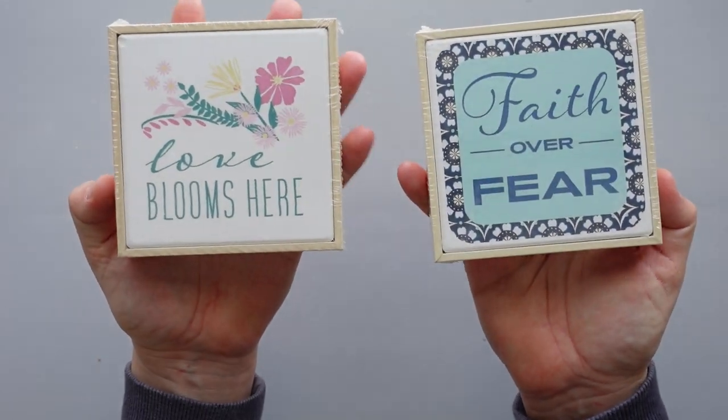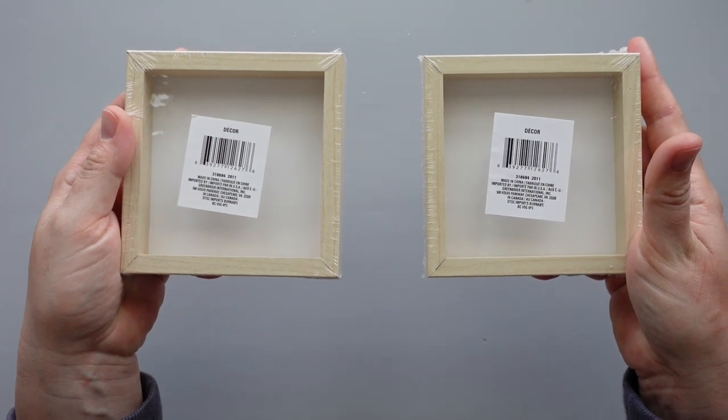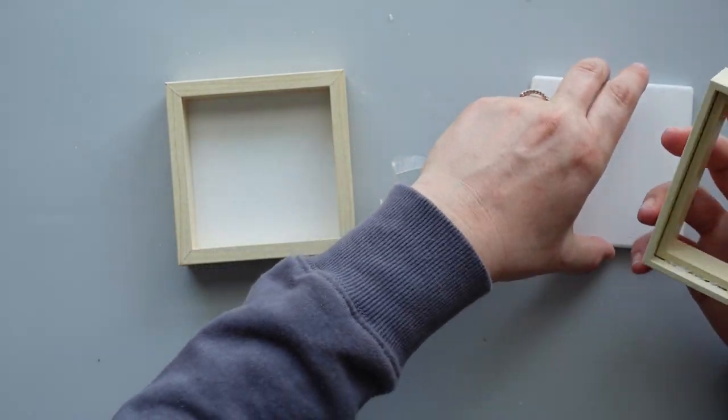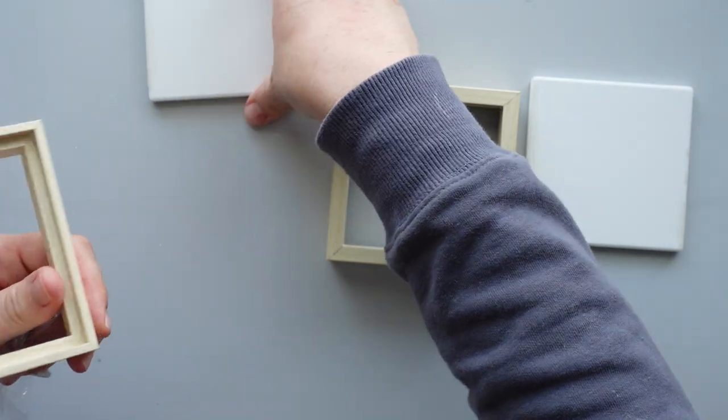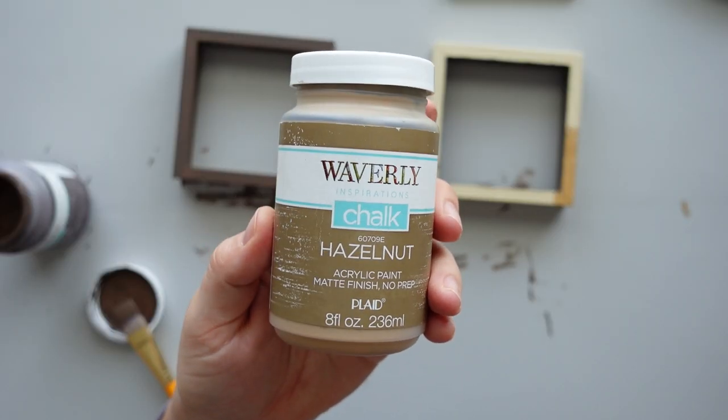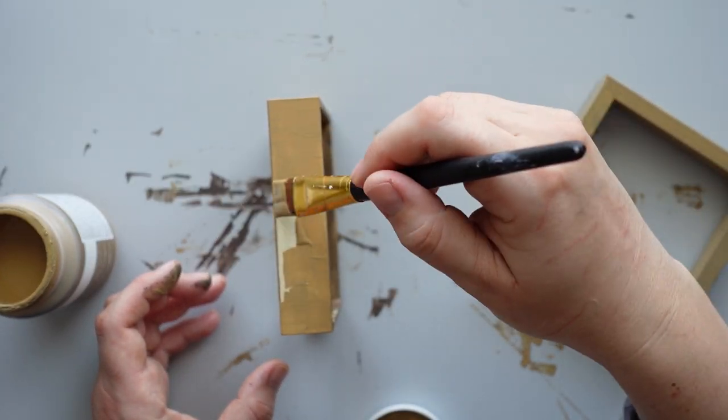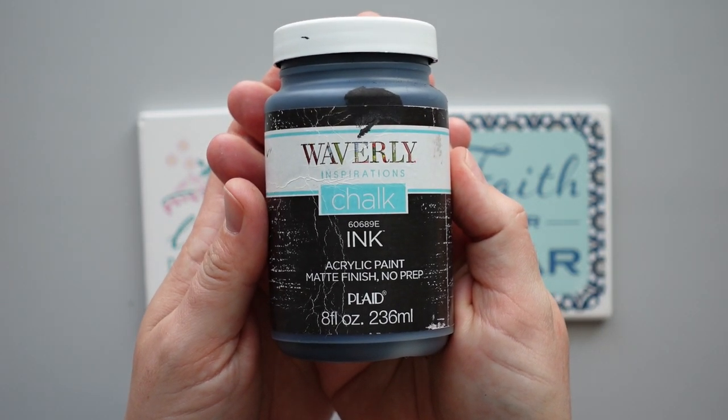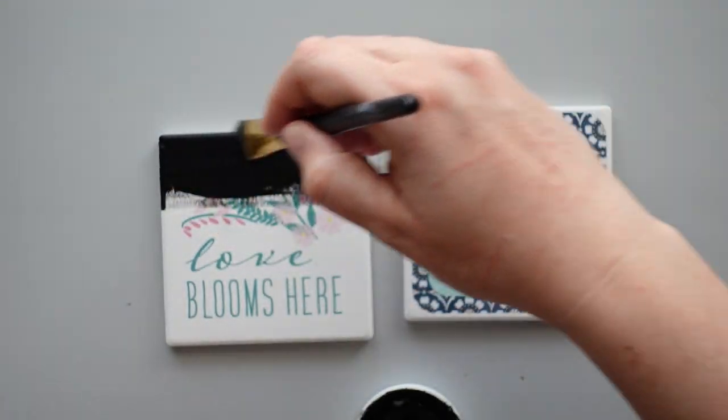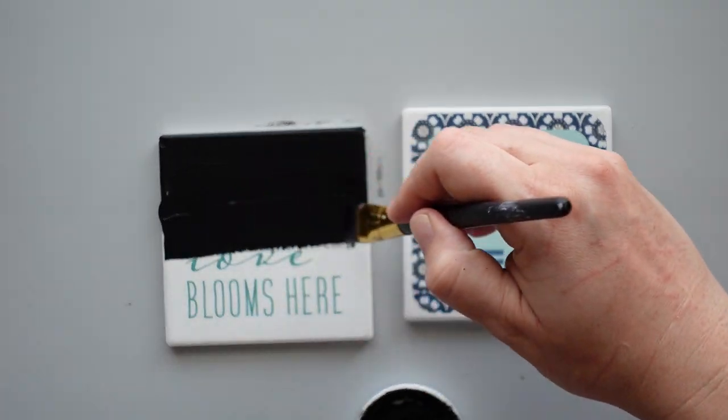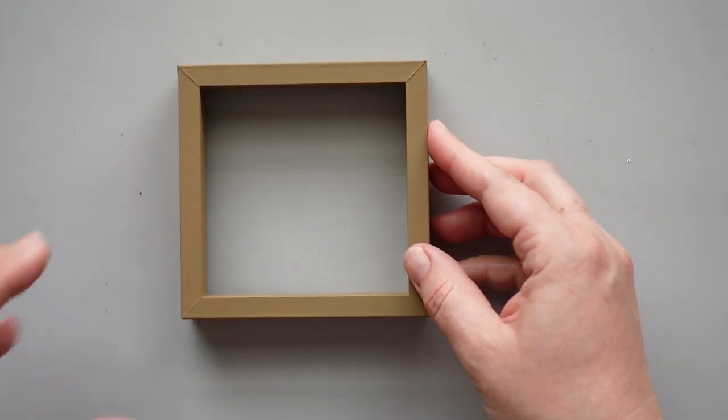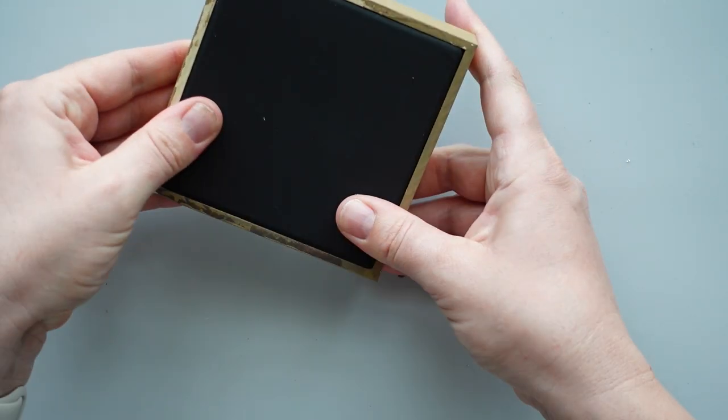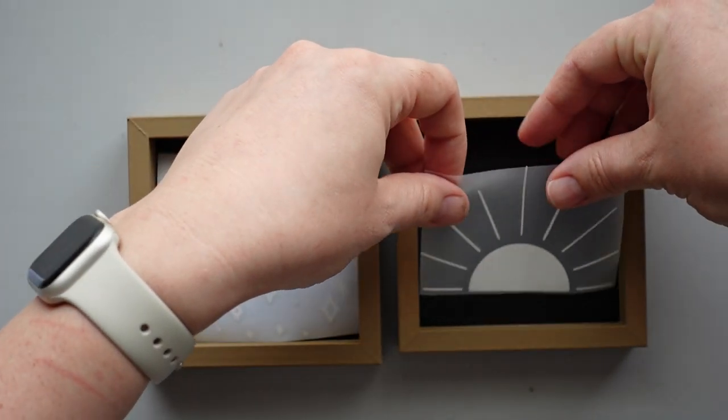For the second DIY, I started with two small signs I picked up from Dollar Tree. I unwrapped the signs and removed the tiles from the frames. After changing my mind a few times, I finally decided on painting the frames with hazelnut chalk paint from Waverly. Once I finished painting the frames, I gave each of the tiles a coat of black chalk paint. When the paint was dry, I placed the tiles back into the frames. Next, I added some vinyl cutouts that I designed in Cricut Design Space.